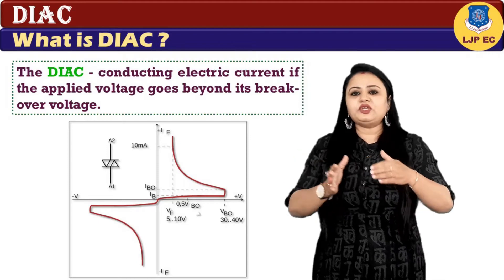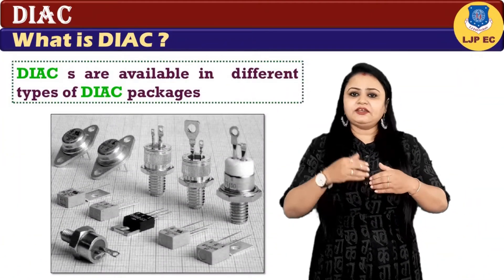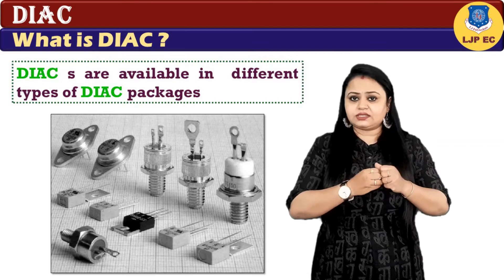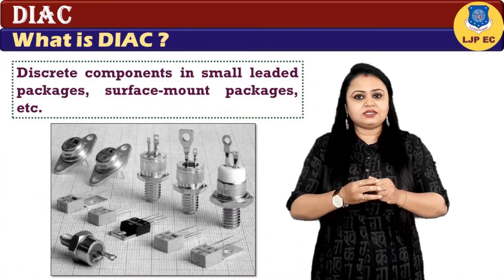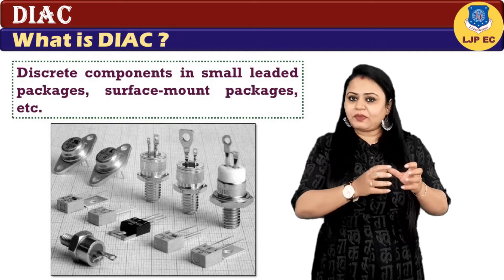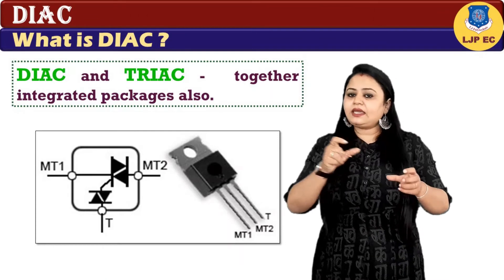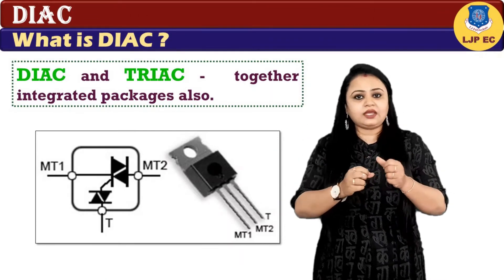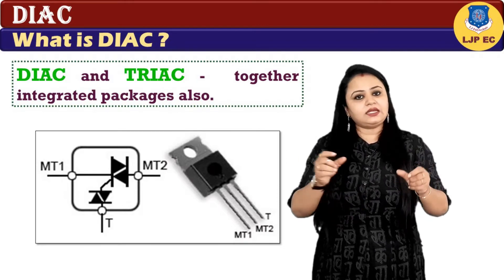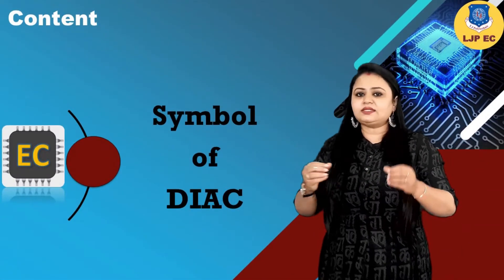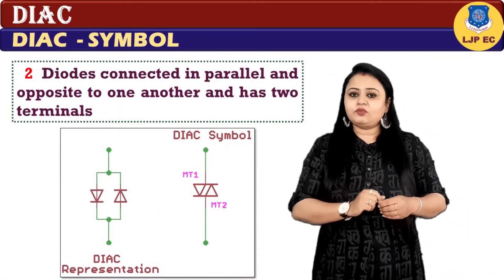The DIAC starts conducting electric current if the applied voltage goes beyond its breakover voltage. DIACs are available in different types of packages such as small leaded packages, surface mount packages, etc. Most of the time, DIAC and TRIAC are used together, so they are available in integrated packages also.